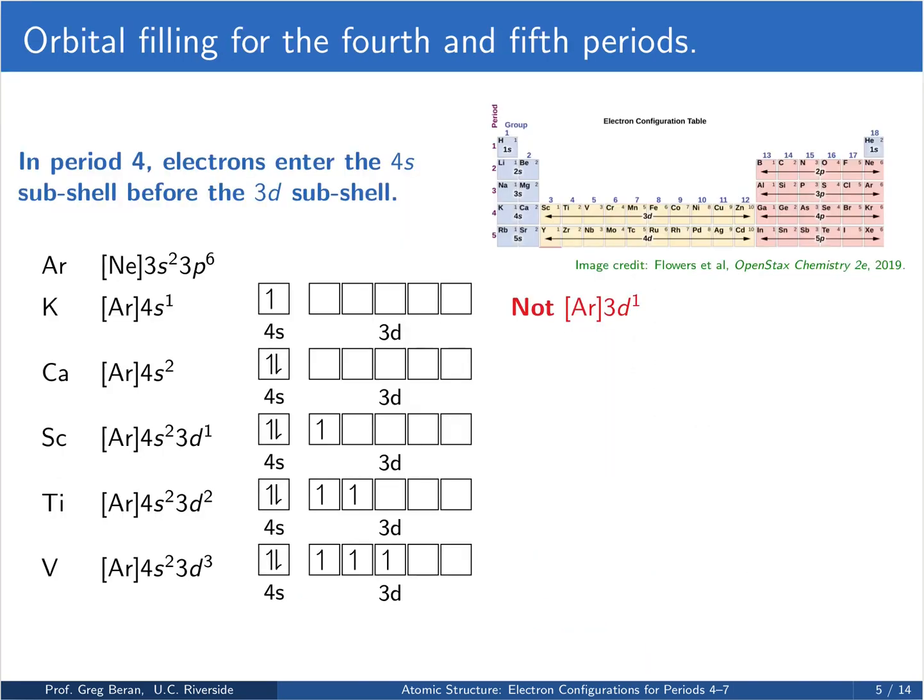Let's start looking at the orbital filling for period 4. Recall that argon here has all its subshells filled up through 3p. So when we come to potassium, the first element in period 4, we're going to start filling the 4s orbital because that's the next lowest energy orbital. So potassium has an argon 4s1 configuration. With calcium we have 2 valence electrons, so we end up with a 4s2 configuration.